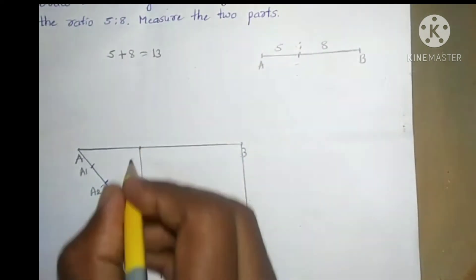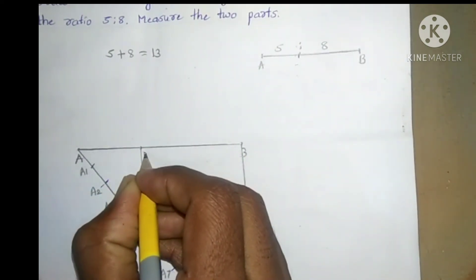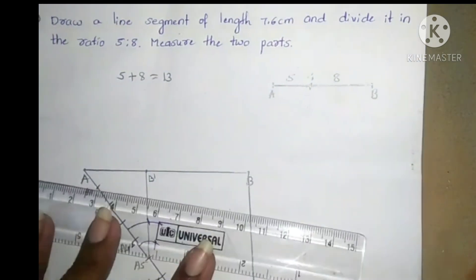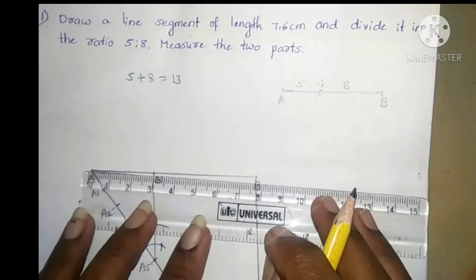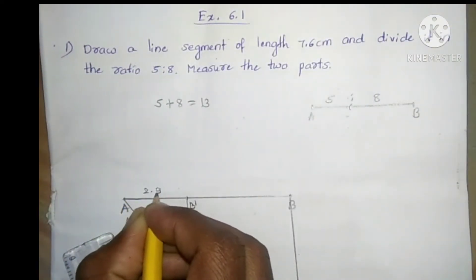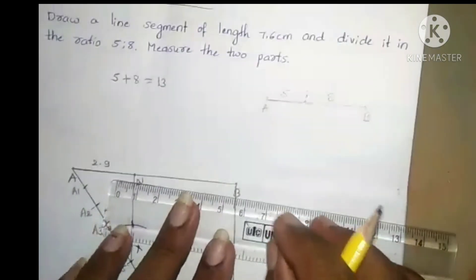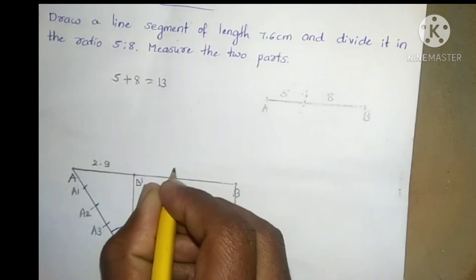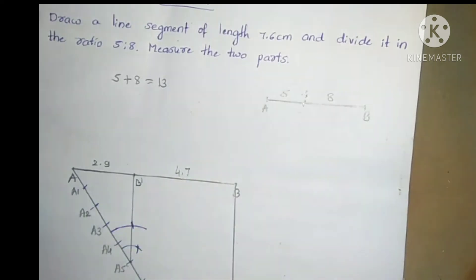Give a name to this point B'. Let us measure both the parts. AB' is 2.9 cm and B'B is 4.7 cm.